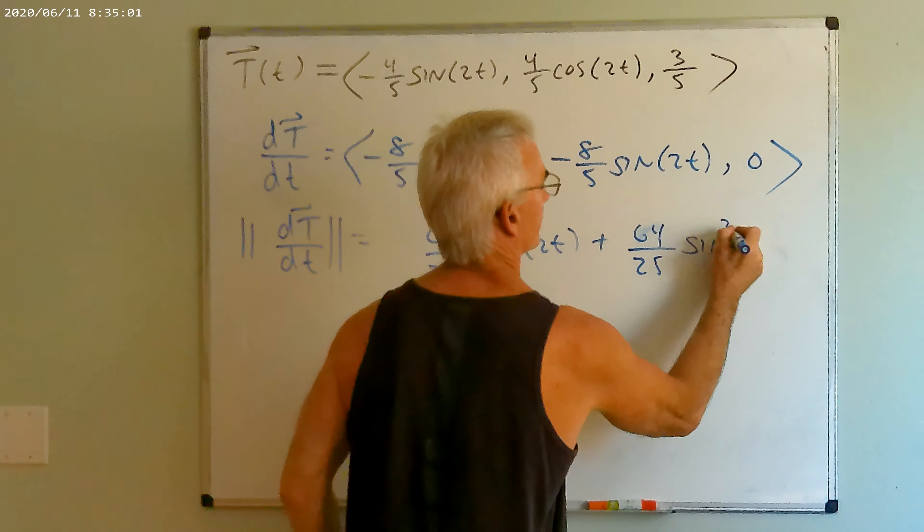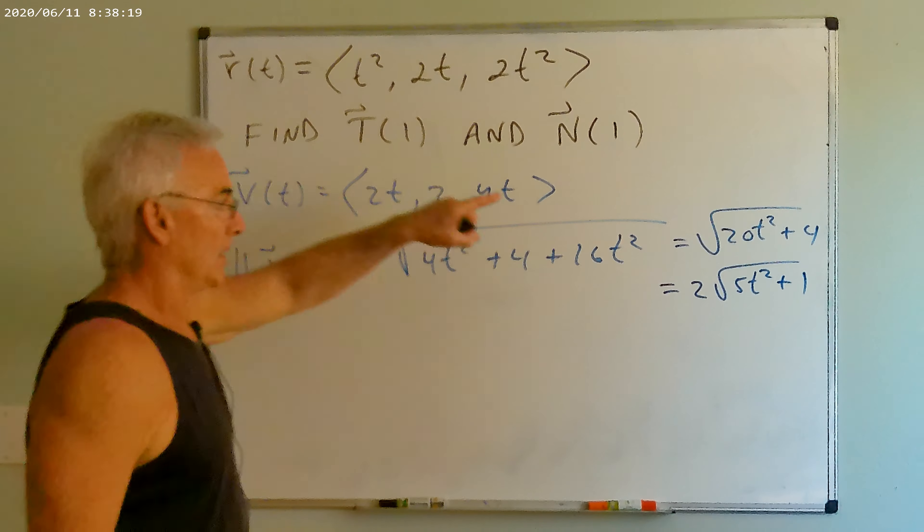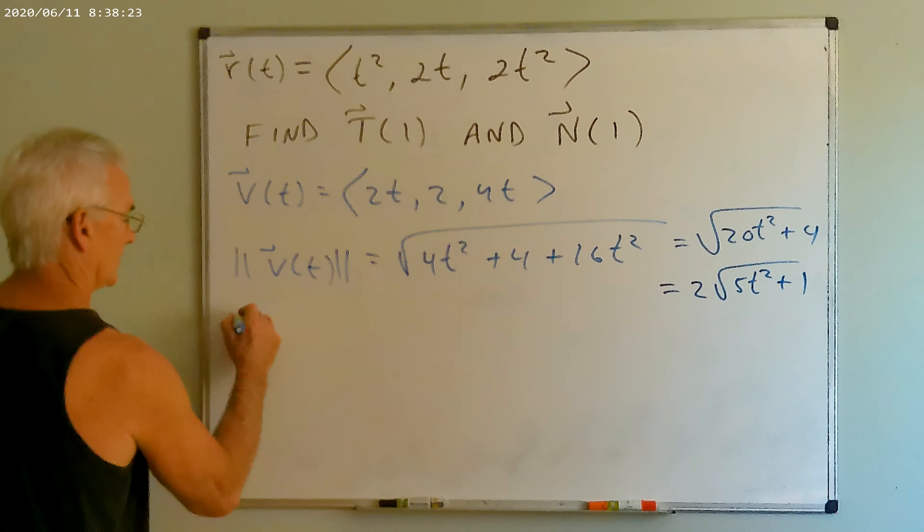Now let's establish the unit normal vector. Starting with the unit tangent, we want its derivative, which is simple enough. Then we find the length of dT/dt by squaring each component and taking the root. Because of the Pythagorean identity again, this simplifies to the square root of 64/25, or eight-fifths.